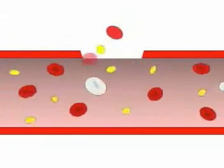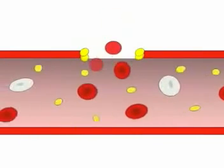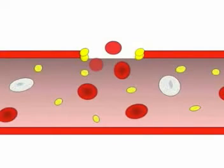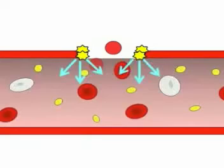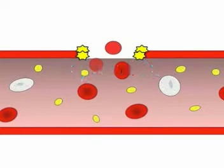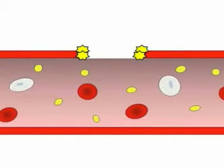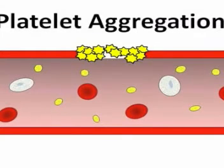Platelets soon recognize the injury and begin to stick to the damaged surfaces. This is called platelet adhesion. The adhering platelets change shape and release chemicals which keep the vessel constricted and draw more platelets into the damaged area. These platelets are said to be activated. Additional platelets arrive and begin to stick to one another so that a loose plug is formed. This is called platelet aggregation.